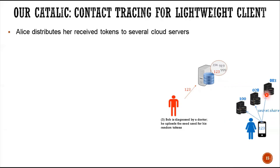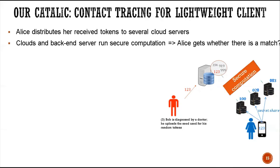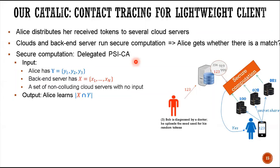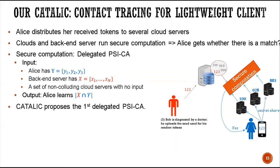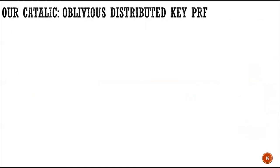In our paper, we proposed a delegated contact tracing system where Alice distributes her received tokens to several cloud servers using secret sharing. This means the sum of the shared values equals the original token — for example, token 1, 2, 3 can be the sum of 100, -20, and 3 across servers. Cloud servers and the backend server then run secure computations. Alice receives as output whether there is a match. The secure computation here is the delegated PSICR. Alice has set Y, the backend server has set X, the cloud server has no input, and Alice learns the size of the intersection and nothing else.